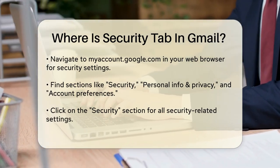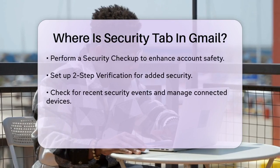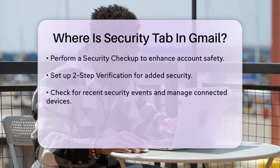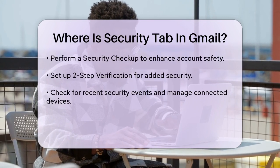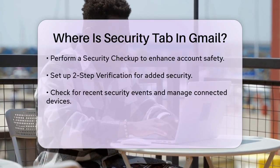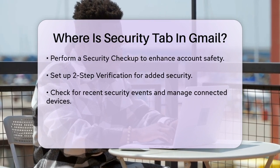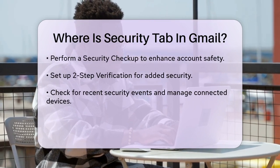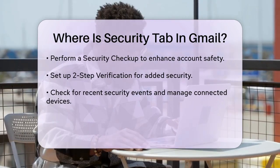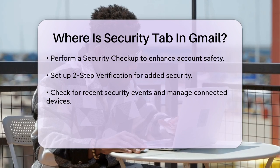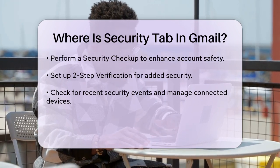Here, you can do things like run a security checkup, set up two-step verification, check recent security events, manage connected devices, and review app permissions. For example, under the Security Checkup, you can enter a recovery phone number and email address, check for any suspicious activity, and review the devices connected to your account.